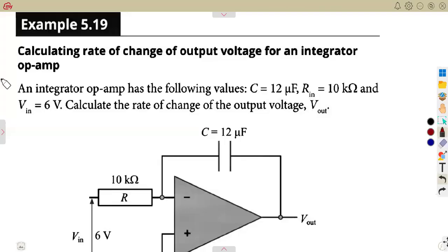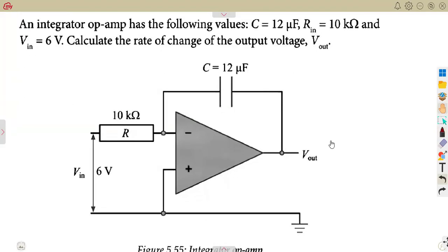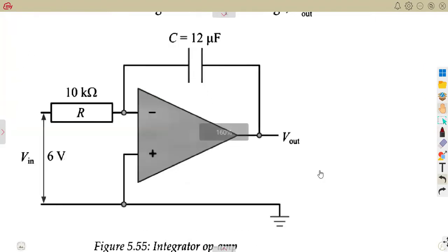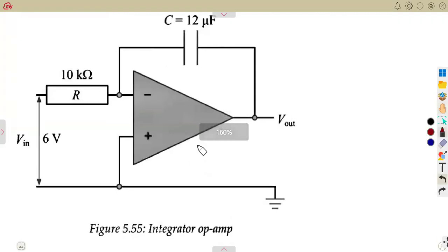For the integrator op-amp calculations, we are going to notice that actually we do not have a lot of things to consider. This is an integrator op-amp. That is how we are going to be given our circuit like this, whereby we've got the resistance at the input and the capacitor on the feedback. So the feedback this time is in the form of a capacitor.